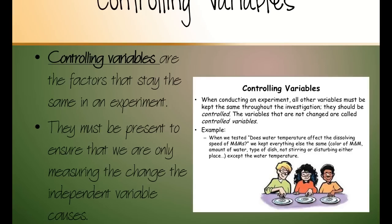Alright, variables. We're working in class on variables. It's very important that you understand the difference between the three. So controlling variables, I want to go back to this for a minute. They're the factors that stay the same in an experiment. There can be many controlled variables in an experiment. They have to be present. You must have controlled variables in correct experimental design because we want to make sure we're only measuring the change the independent variable causes.